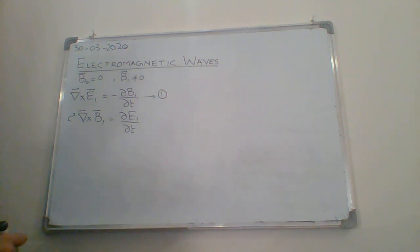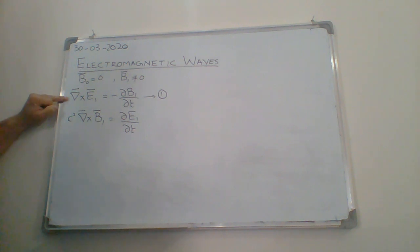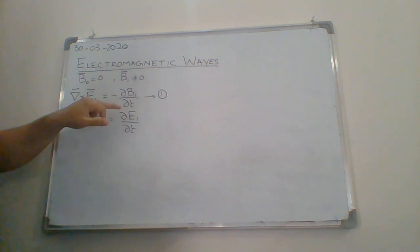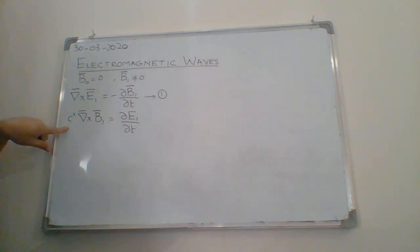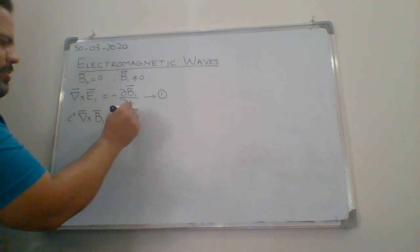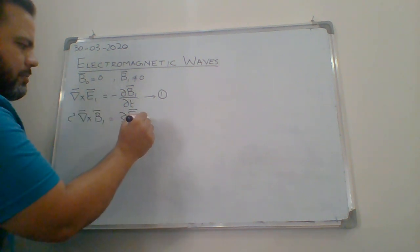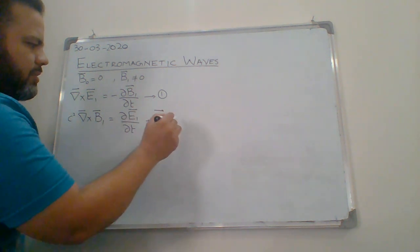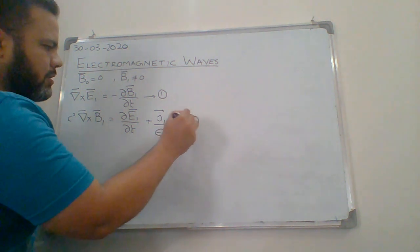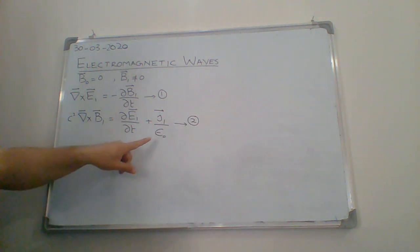Now I'm going to discuss electromagnetic waves in plasma. My first equation, Faraday's law, will remain the same: del cross E1 equals minus partial B1 by partial t. The second equation, Ampere's law, is C squared del cross B1 equals partial E1 by partial t plus J1 by epsilon naught. This J1 is the first order contribution from the plasma due to particle motion.